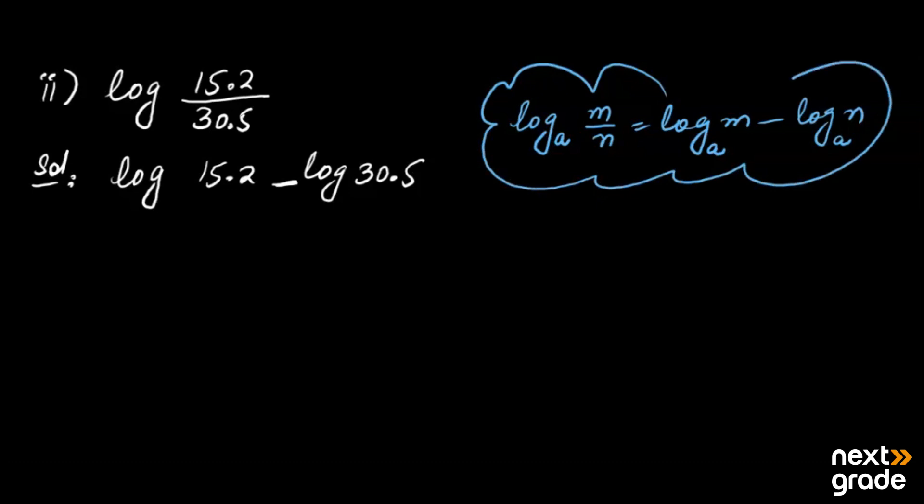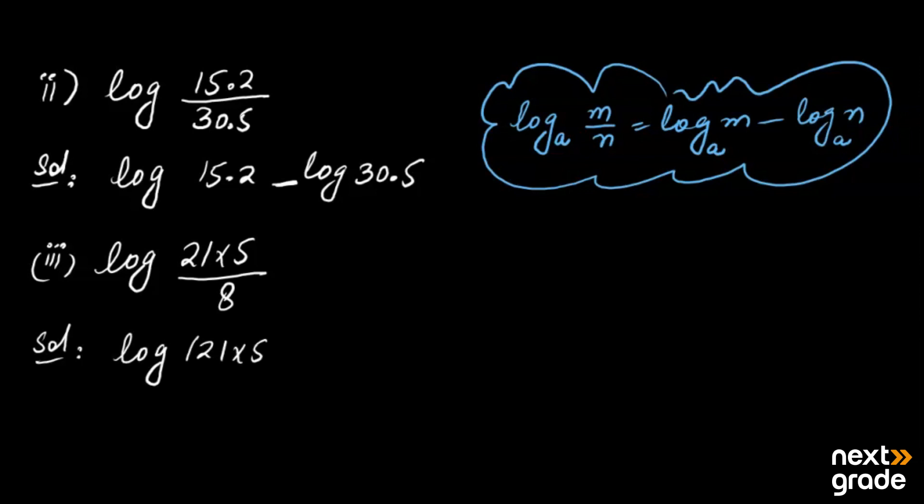For log of 21 upon 5, first of all you need to check what happens here. Here is a fraction. If it is a fraction, it means that we need to apply the property. We need to subtract the numerator and denominator.